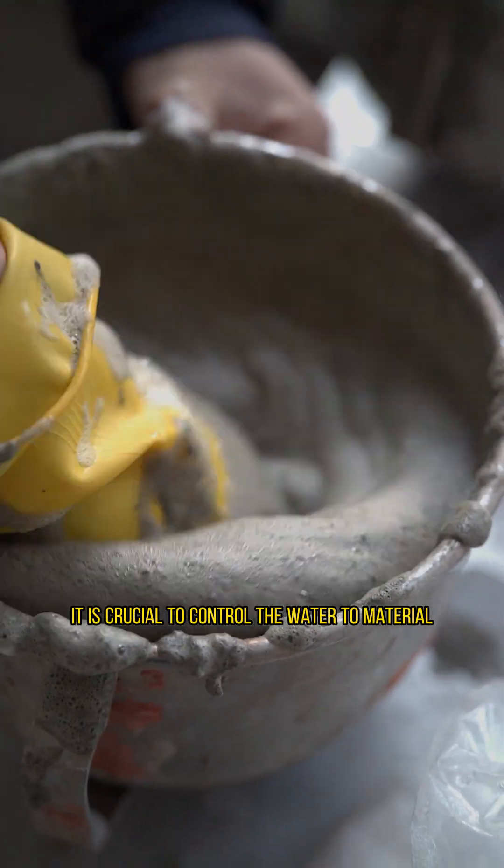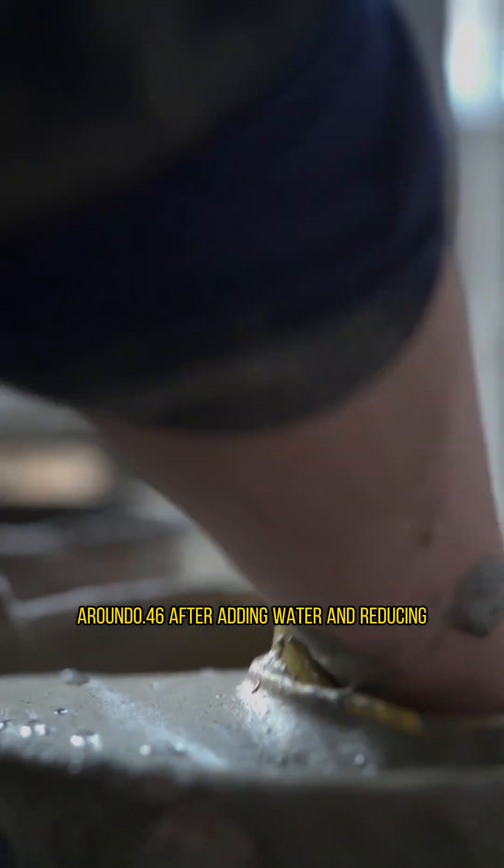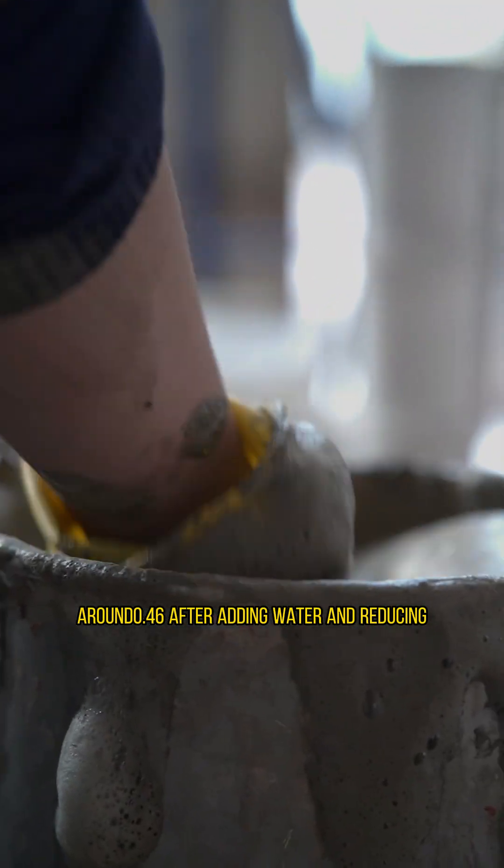At the same time, it is crucial to control the water to material ratio between 0.55 to 0.60, which can be reduced to around 0.46 after adding water reducing agents.